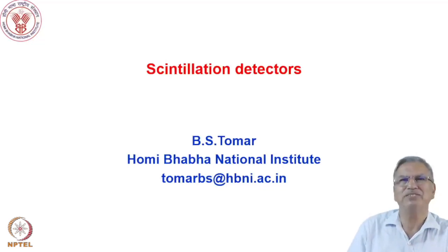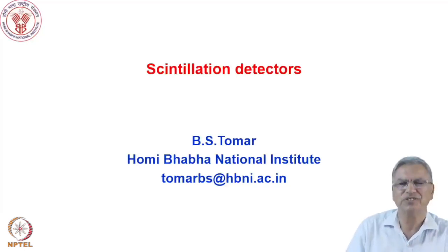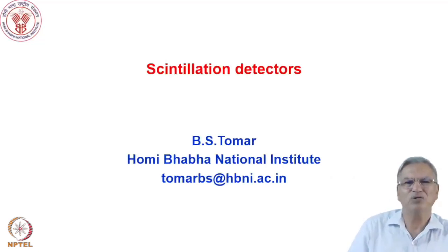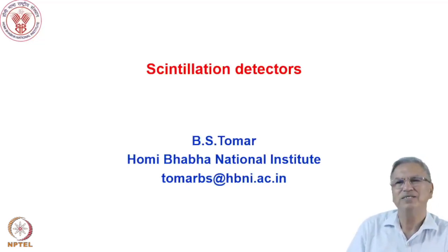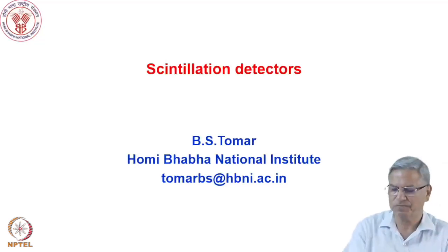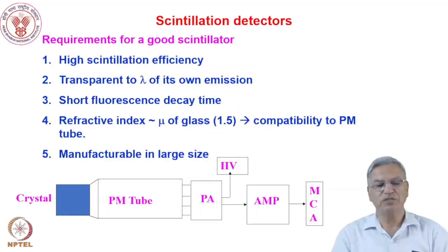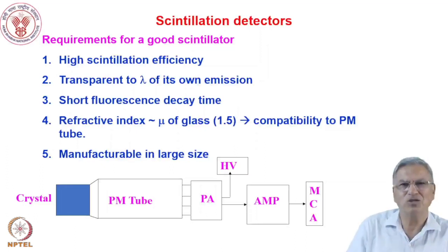As the name itself implies, when the radiation falls on this material, certain materials are luminescent or they fluoresce. They are basically fluorescing materials — when radiation falls on them, they produce light, and that light can be used in a photomultiplier tube to generate electrons. That is the type of detectors we will be discussing in this lecture. Scintillation detectors are those detectors which, when radiation falls on them, produce light.